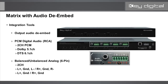Let's take a look at the commonly utilized integration tool of output audio de-embedding. The PCM digital audio connection is a coaxial RCA supporting two-channel, 5.1, or even 6.1 audio formats, but not HD audio formats like 7.1. The balanced/unbalanced connector is a six-pin Phoenix connector supporting left and right audio — left plus, left minus, right plus, right minus, and ground — or you could just use the positive channels: left plus, right plus, and ground.